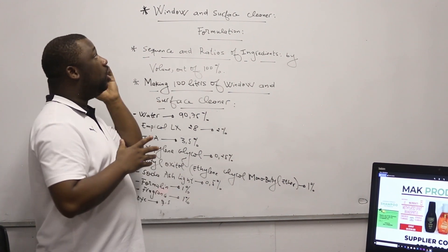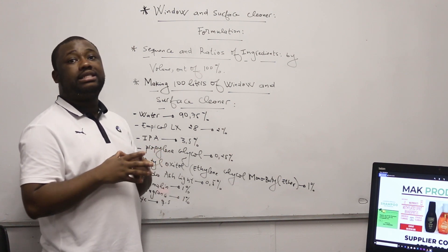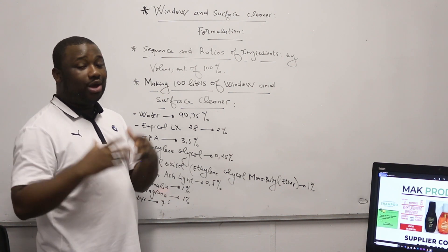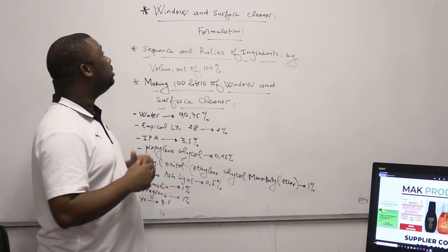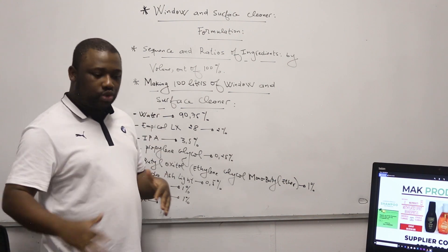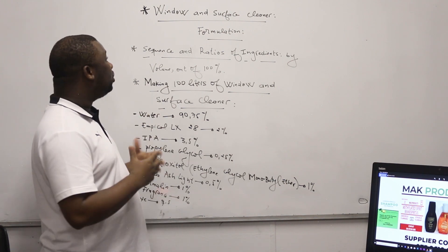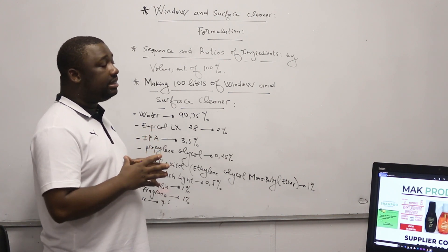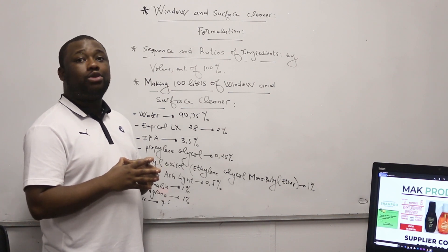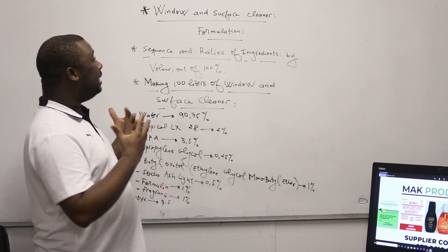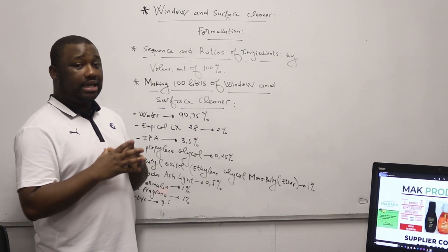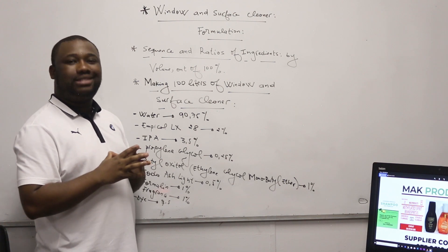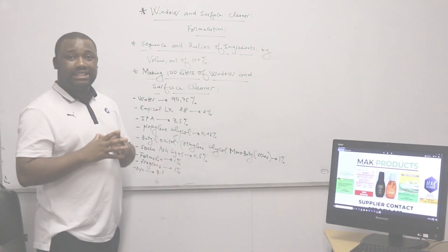So how is this video going to be structured? As I said, I'm going to give you the formulation on how to manufacture the window and surface cleaner. This is one product with double action — double uses. It can be used as a window cleaner and also as a surface cleaner. We'll first state the ingredients, then I'll show you the sequence to mix them and the related amount of each.